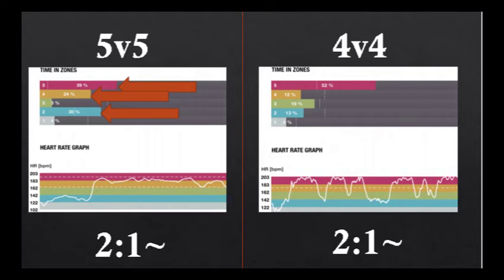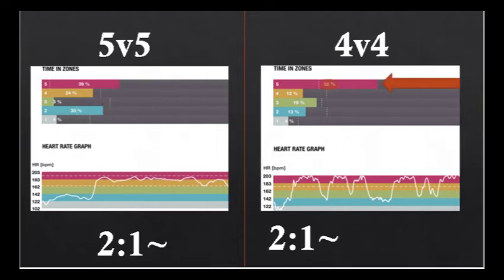However, in the 4v4, ATP-CP was relied upon for over half of the energy production for the entire game. Therefore, the work-rest ratio was not suitable for the 4v4 game as the ATP-CP system needs a work-rest ratio of 1:6.